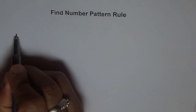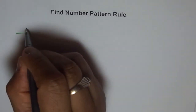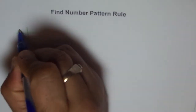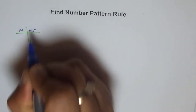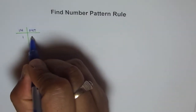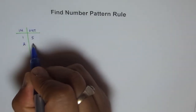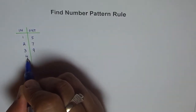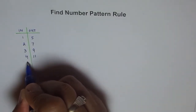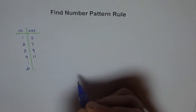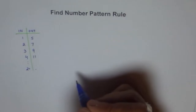Here it is. Let's say we have a number pattern. I'm making a T-chart with input values and output values. Input 1, output 5. Input 2, output 7. Input 3, output 9. Input 4, output 11. And you need to find: if input is 20, what should be the output?